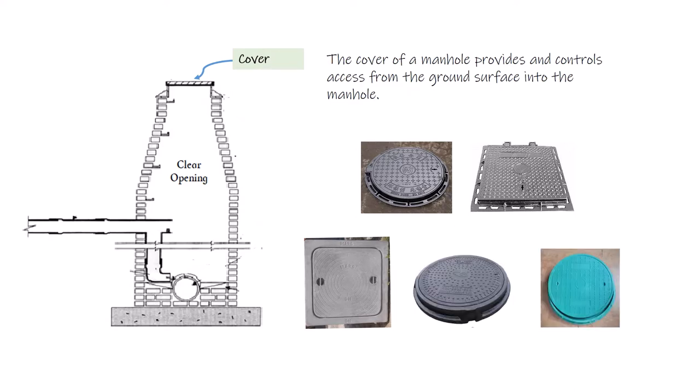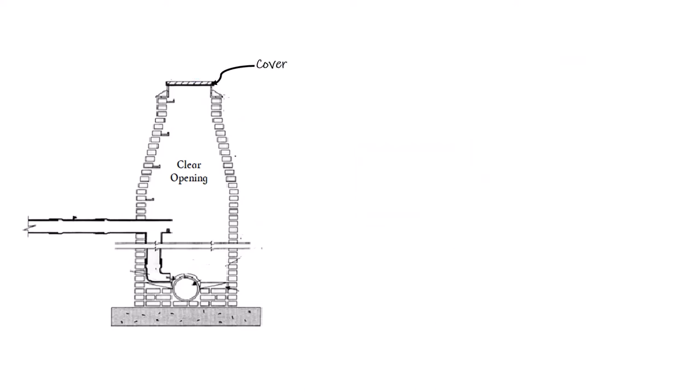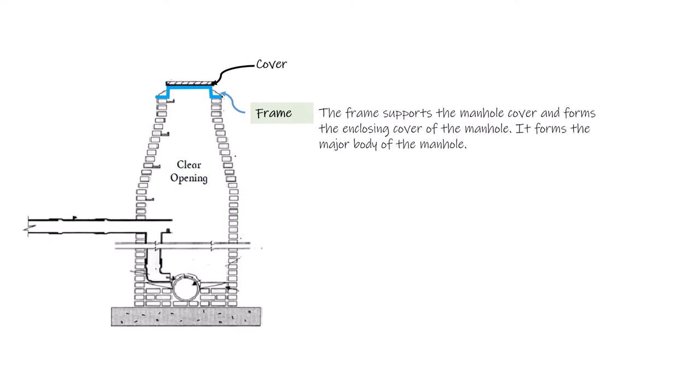Number two: the frame of a manhole. The frame supports the manhole cover and forms the enclosing structure of the manhole. It forms the major part of the manhole and is made of brick, precast concrete, plastic, or fiberglass.